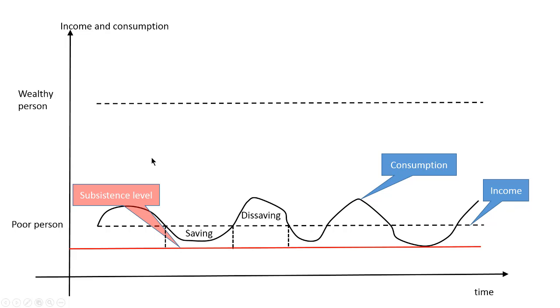And we can compare what happens to a wealthy person. We have income, a dashed line, and this is consumption of that person.